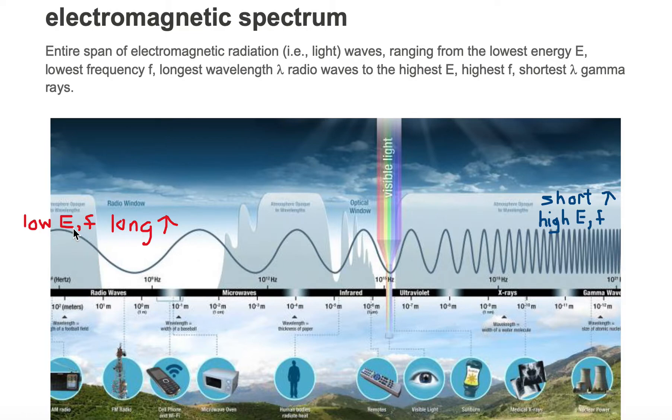On the left end, we have our radio waves, which are our longest wavelength waves. They have the lowest energy and the lowest frequency. Then we pass through our microwave band into our infrared band, into our visible band, into our ultraviolet band, making our way into our x-ray band, and then finally making it into our gamma ray band.